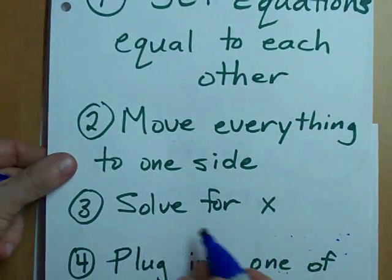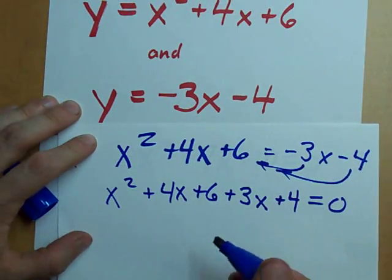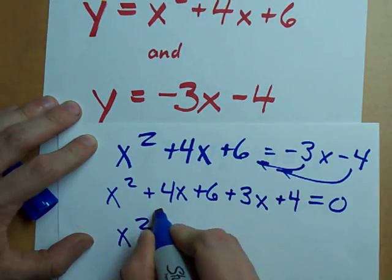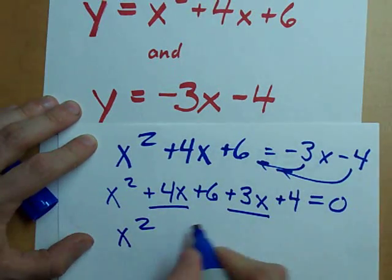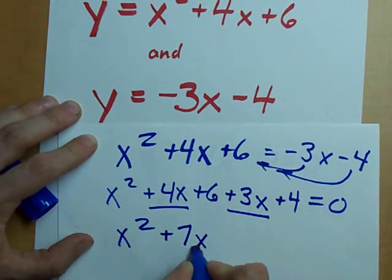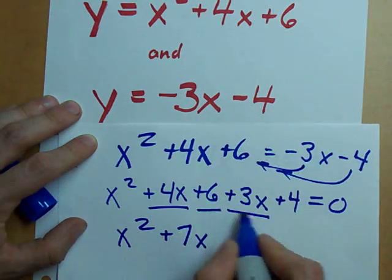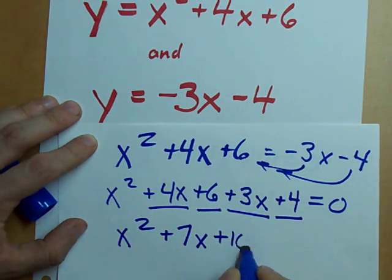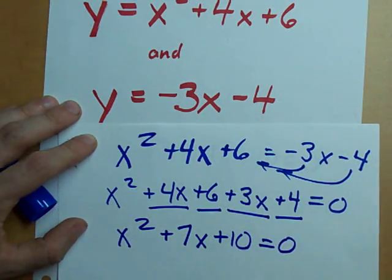Number three, solve for x. Well, first we can clean this up a little bit. 4x and 3x together make 7x. 6 and 4 add together to make 10. There. Doesn't that look prettier?